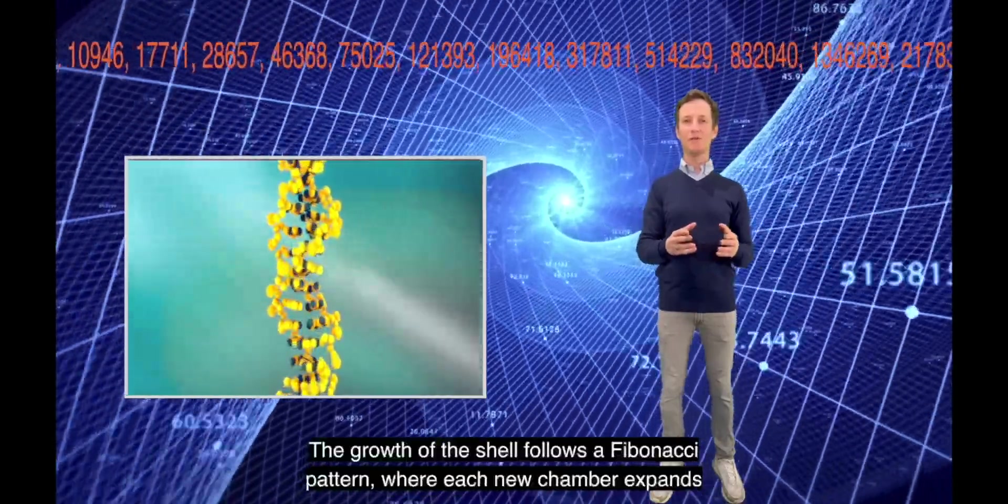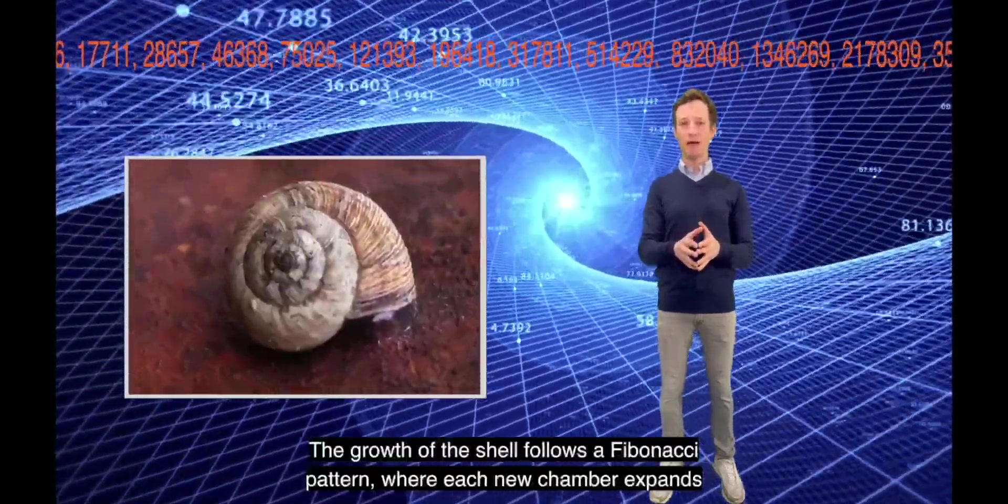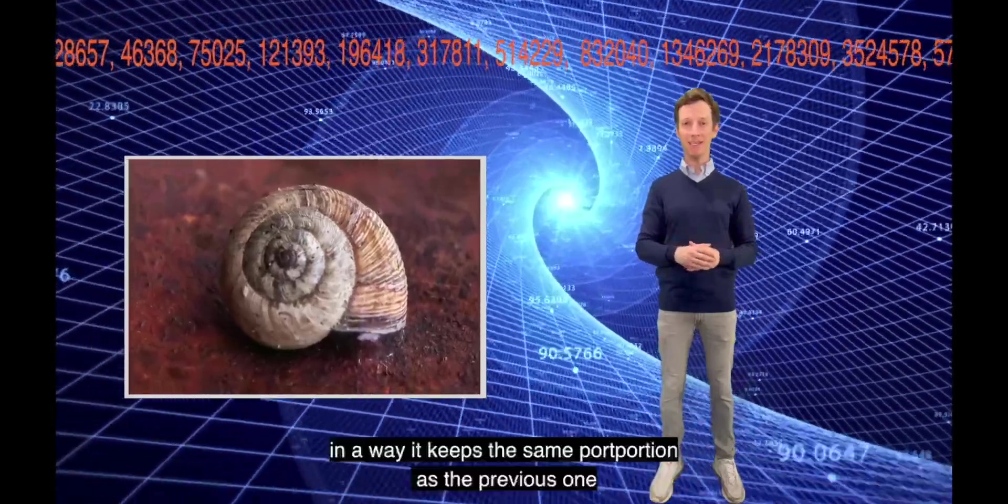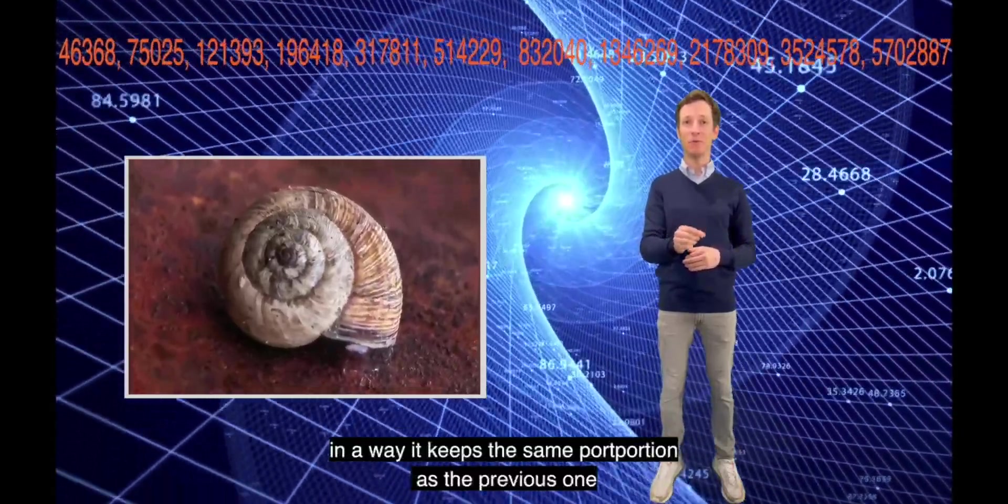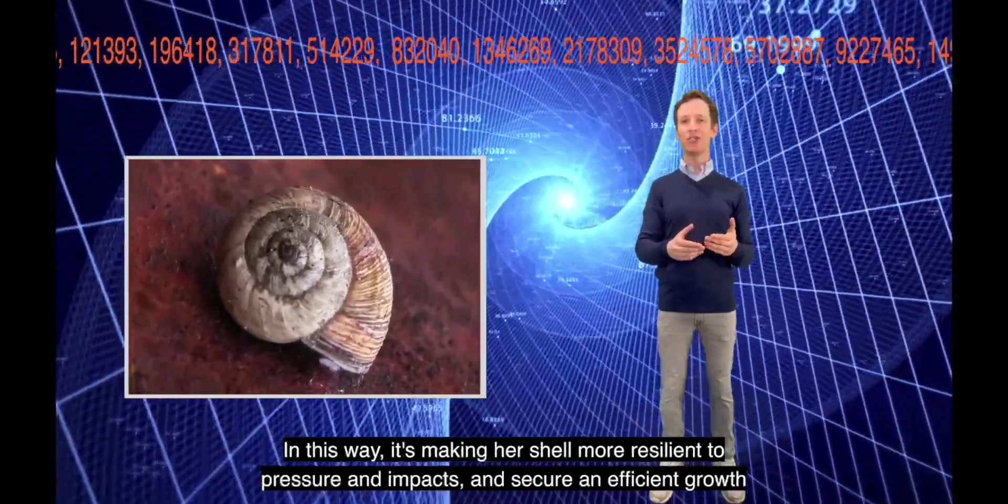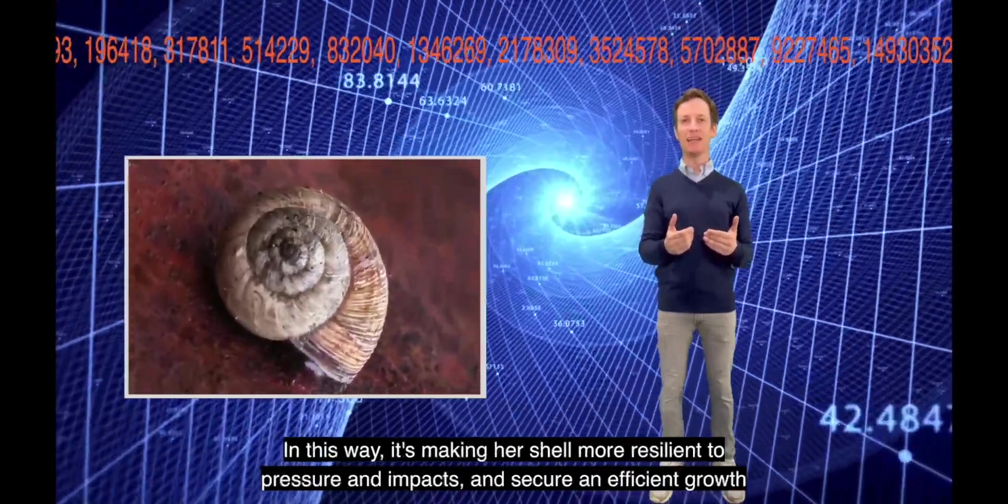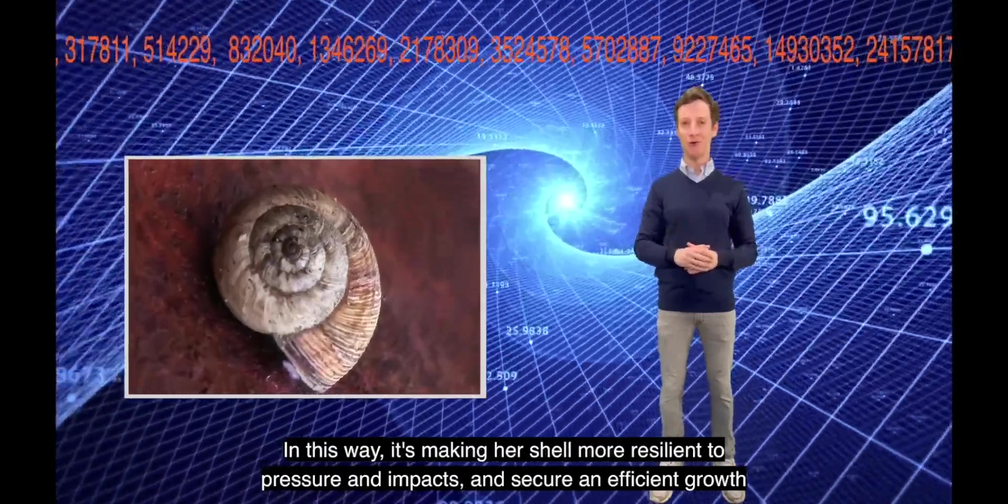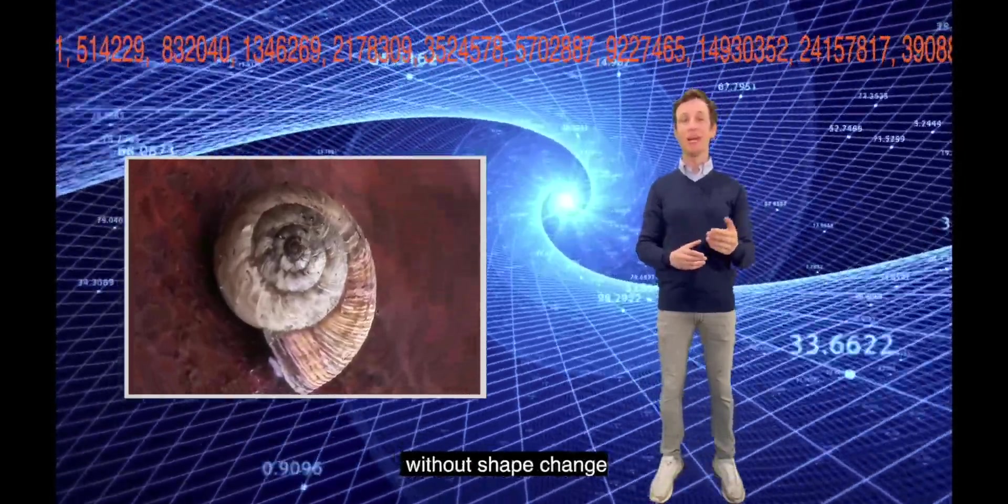The growth of the shell follows the Fibonacci pattern, where each new chamber expands in a way that keeps the same proportion as the previous cell. In this way it's making her shell more resilient to pressure and impacts and secures efficient growth without shape change.